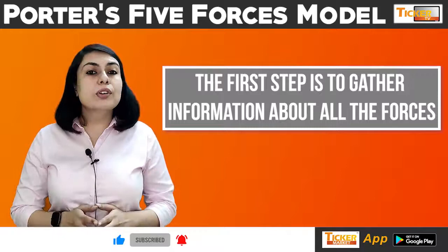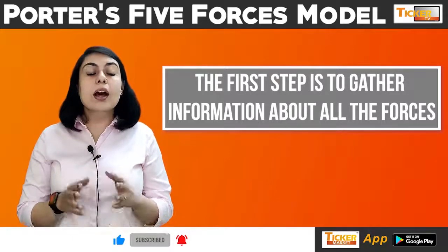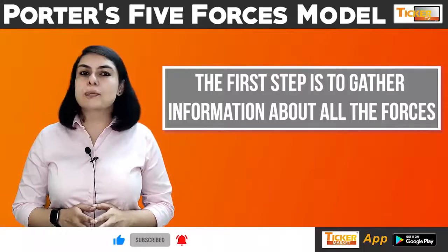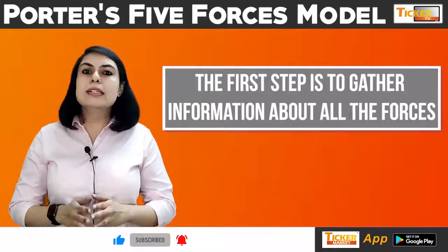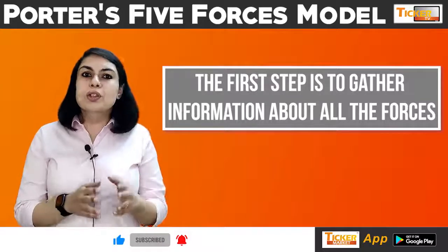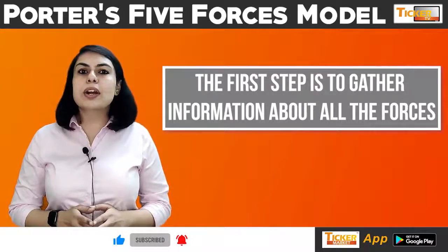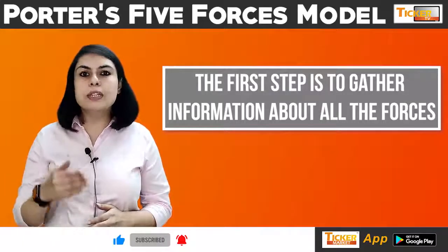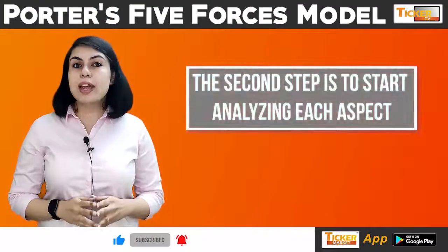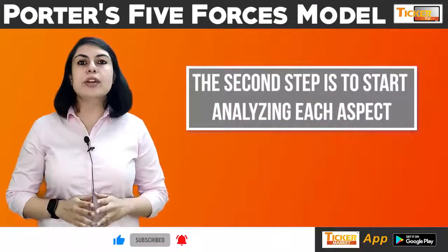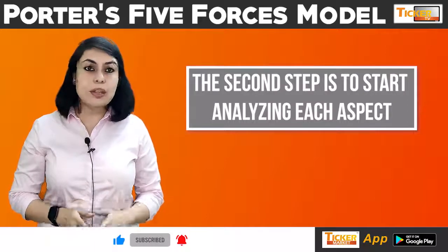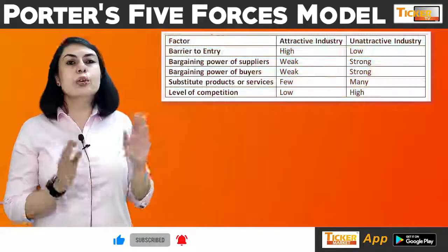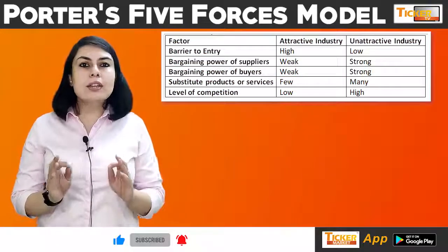Under the Bargaining Power of Sellers, consider: How many sellers or suppliers are there? What is the financial strength of each supplier? Can the supplier easily find substitute materials? Do the suppliers hold difficult-to-find materials? What is the cost of switching to alternate materials? The second step is to start analyzing each aspect carefully, trying to determine how each force impacts the industry and the company that you are planning to invest in. You can use a reference table to analyze the attractiveness of an industry.